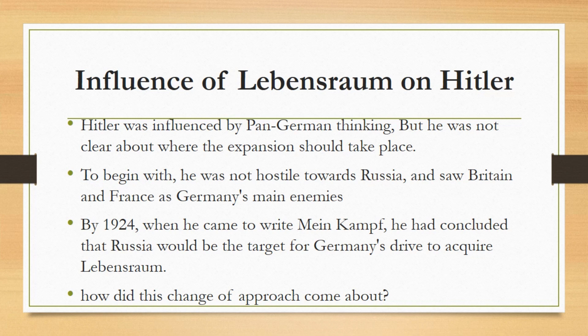Hitler had already started his political career in 1919 and had been influenced by this kind of pan-German thinking, but he was not yet clear about where the expansion should take place, nor about what alliances he would need to achieve it. To begin with, he was not hostile towards Russia and saw Britain and France as Germany's main enemies. During 1919 he blamed Germany's pre-war politicians for supporting Austria-Hungary against Russia. But by 1920 he was arguing that an alliance between Russia and Germany could come about only when Jewry is removed, and by 1924, when he came to write Mein Kampf, he had concluded that Russia would be the target for Germany's drive to acquire Lebensraum.